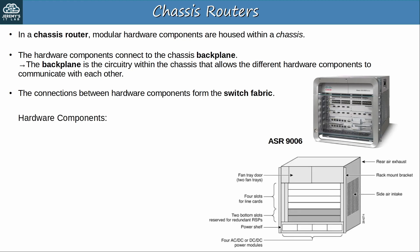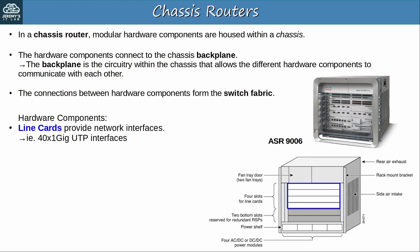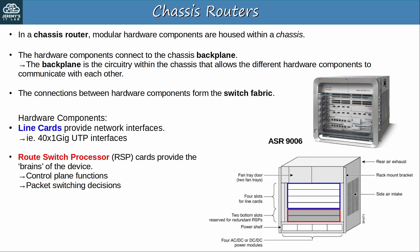Let's define some of those hardware components. Note there is a photo of an ASR-9006 router and below a diagram indicating the hardware components. Line cards, outlined in blue in the diagram, provide network interfaces. For example, a line card might provide 40 1GB Ethernet UTP interfaces, or 24 10GB interfaces, or 8 100GB interfaces — chassis routers are very customizable. Then Route Switch Processor, RSP cards, provide the brains of the device: control plane functions, packet switching decisions, the switch fabric that connects the other cards together, and management interfaces like console ports. The ASR-9006 has 6 slots — 4 for line cards and 2 for RSPs. The number at the end of the model name indicates the number of slots for line cards and RSPs. You might also hear the name Supervisor for the RSP cards.